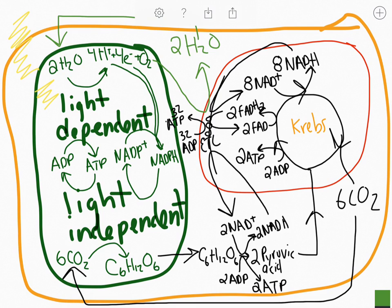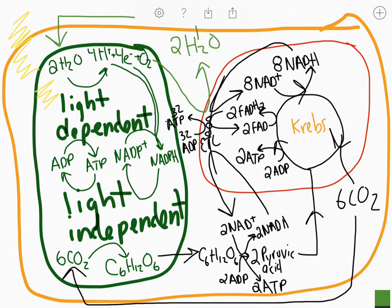So we've taken light energy, converted it to ATP and NADPH, stored it as chemical potential energy, then transferred that into sugar. We follow that sugar as it gets broken down, temporarily stored in NADH and FADH₂, which are broken down in the electron transport chain, creating a concentration gradient used with ATP synthase to produce ATP. In total: two ATP from glycolysis, two from the Krebs cycle, and 32 from the electron transport chain — about 36 ATP from one sugar molecule that got its energy from the sun.